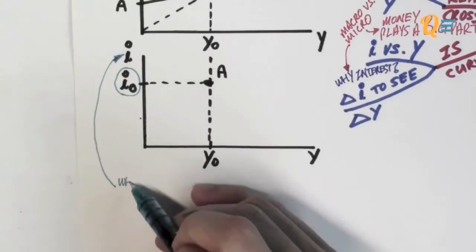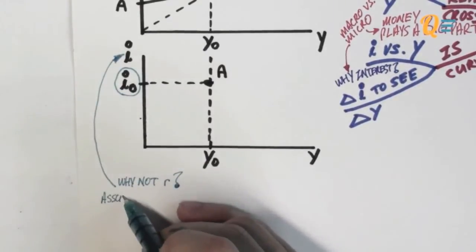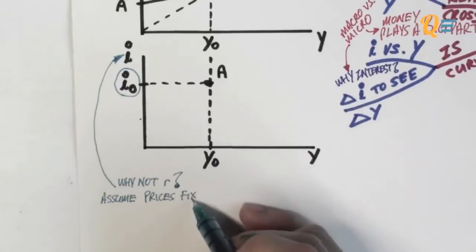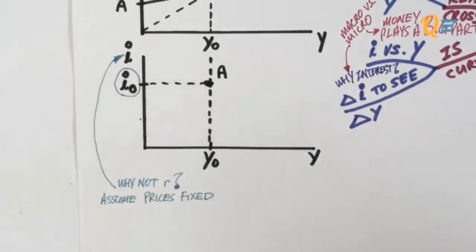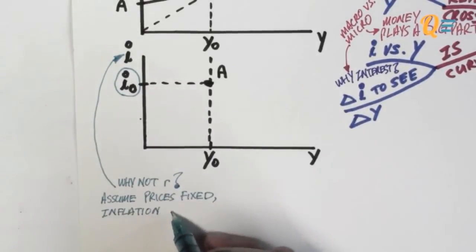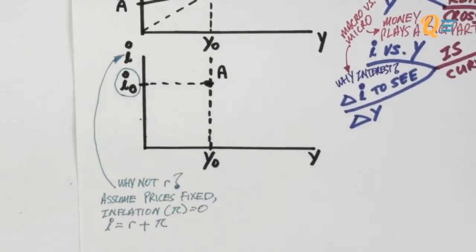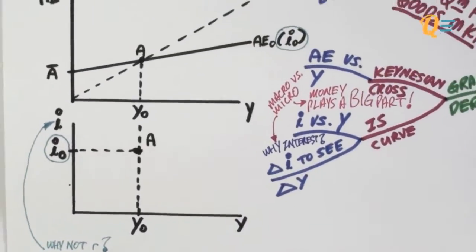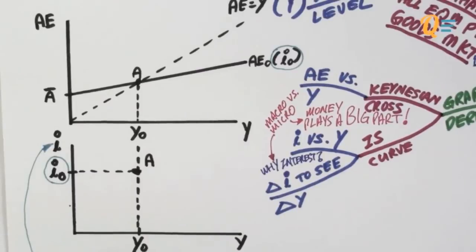Now you might be wondering why I'm using I for interest rates and not R. R here stands for the real interest rate. So why am I using nominal instead of real? Well, that's because I assume that prices are fixed and that inflation is equal to 0. So if I write out the equation for the nominal interest rates, which is the real interest rates plus the inflation rate, which is 0, then I'm going to get I equals to R. So the nominal interest rate here is the same as the real interest rate. So there's really no difference using I or R.